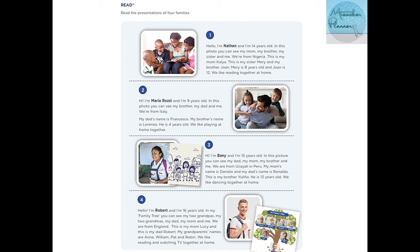Number four: Hello, I'm Robert and I'm 16 years old. In my family tree you can see my two grandpas, my two grandmas, my dad, my mom, and me. We are from England. This is my mom Lucy and this is my dad Robert. My grandparents' names are Ann, William, Pat, and Robin. We like reading and watching TV together at home. Nosotros somos de Inglaterra.